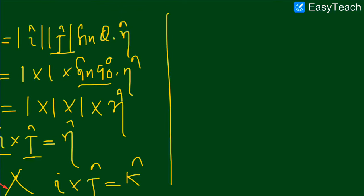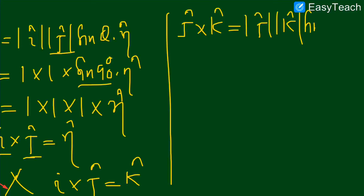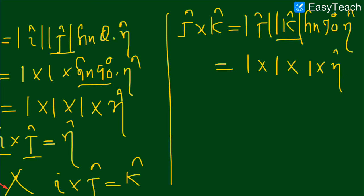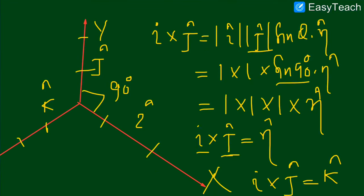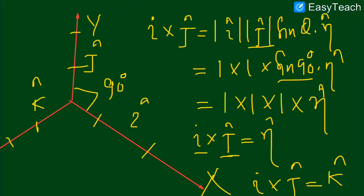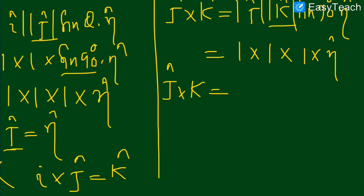Now let's find J cross K. As per definition it is magnitude of J, magnitude of K, into sine of 90 degrees, into n̂. J magnitude is 1, K magnitude is 1, sine 90 is 1, so J cross K equals n̂. The unit perpendicular vector to J and K is I. So J cross K is equal to I. Similarly you can prove that K cross I is equal to J.